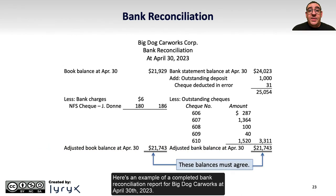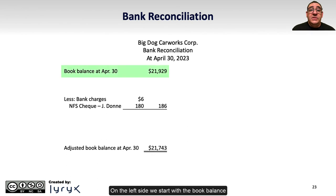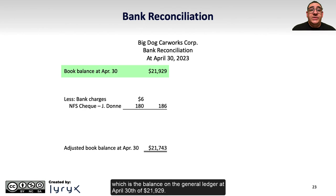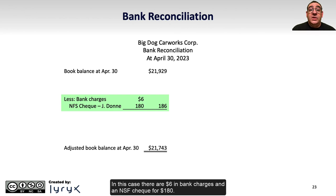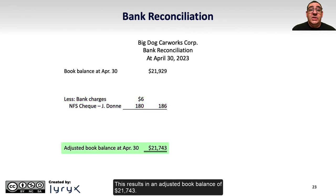Here's an example of a completed bank reconciliation report for Big Dog Car Works at April 30, 2023. On the left side, we start with the book balance, which is the balance on the general ledger at April 30, of $21,929. We then include any adjustments for items that are processed through the bank account but not the books. In this case, there are $6 in bank charges and an NSF check for $180, resulting in an adjusted book balance of $21,743.